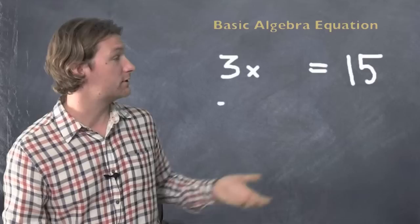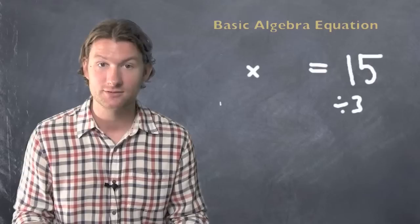Now we just got to do the inverse of times 3, which is going to be divided by 3. Do it on both sides. You'll get x equals 5. That's the answer.